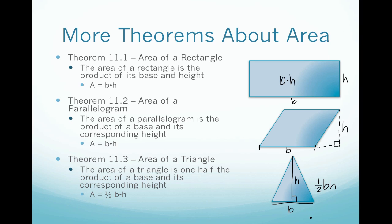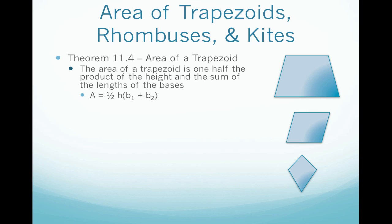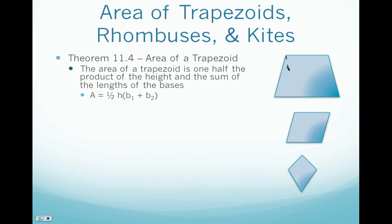Now we're going to move on to a few polygons you may not be as familiar with: trapezoids, rhombuses, and kites. The theorem for a trapezoid states that the area is one-half the product of the height and the sum of the lengths of the bases. We label the height as the perpendicular distance between the two bases, and call them base one and base two. So the area equals one-half times height times (b1 + b2).